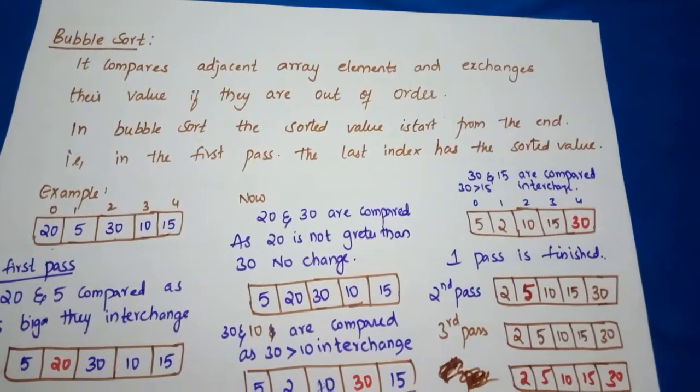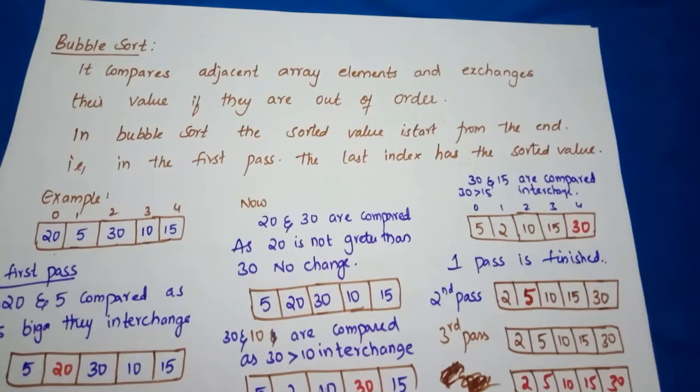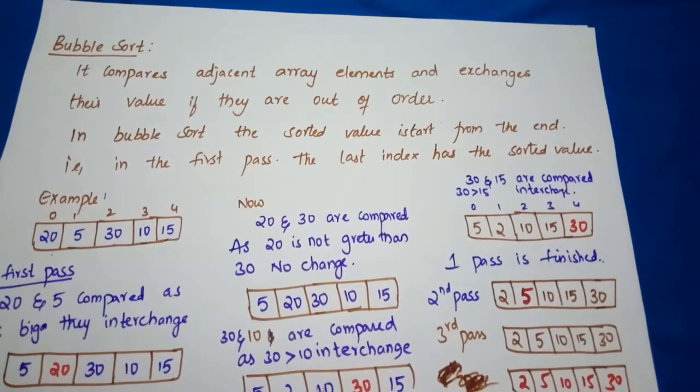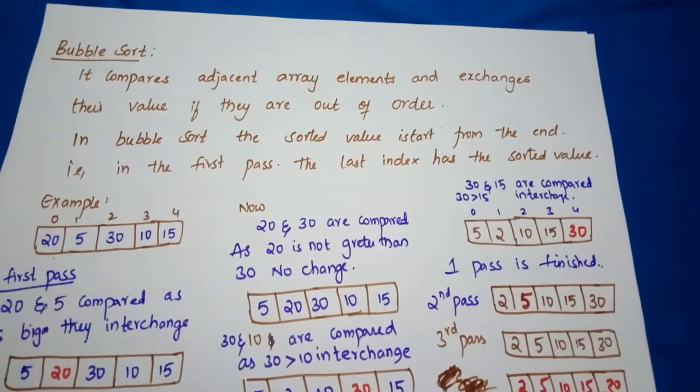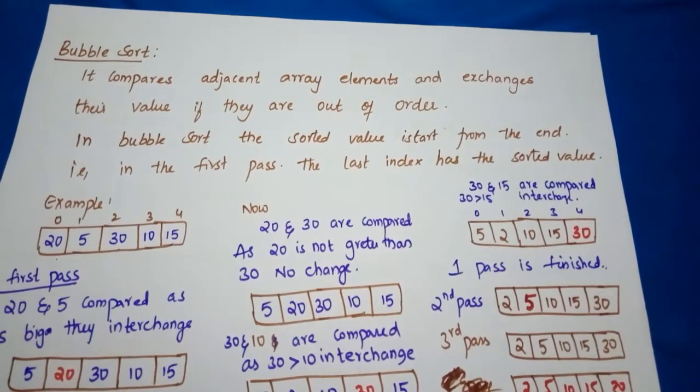What we concluded in selection sort is that selection sort starts from the left side, from the 0th position. In bubble sort, the first place which is sorted will be placed in the size minus one location.